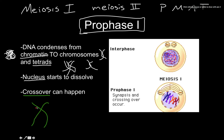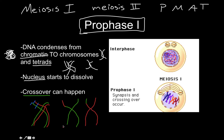Crossover works like this: say the red chromosome and the green chromosome are homologous chromosomes. If a segment on the green chromosome and the corresponding segment on the red chromosome switch places, that's crossover. The result is that the green chromosome ends up with a piece of red, and the red chromosome ends up with a piece of green. So parts of the same homologous chromosomes that carry the same genes switch places during prophase one.